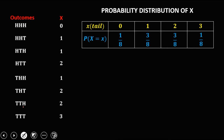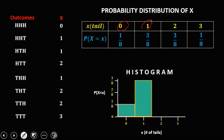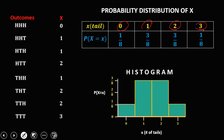Using this probability distribution, we can now construct our histogram. On the horizontal axis we have X (number of tails): 0, 1, 2, and 3. On the vertical axis we have the probability: 0, 1/8, 2/8, and 3/8. The bar heights are 1/8, 3/8, 3/8, and 1/8 respectively. This is the histogram of this experiment.